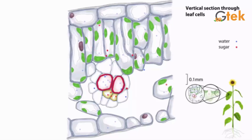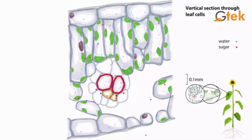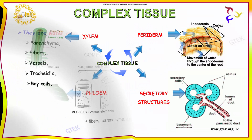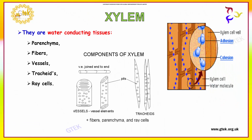This is an experiment done by the GTEC laboratory team. Now we are going to see about xylem. Xylem are water-conducting tissues. It consists of parenchyma, fibers, vessels, tracheids, and rays. You can see the xylem here — this is the xylem ball. This is called adenosine.